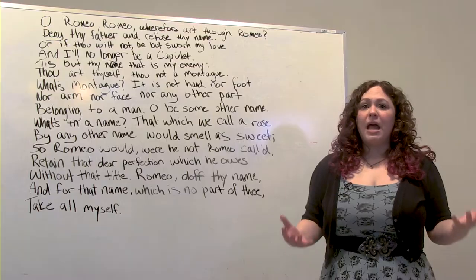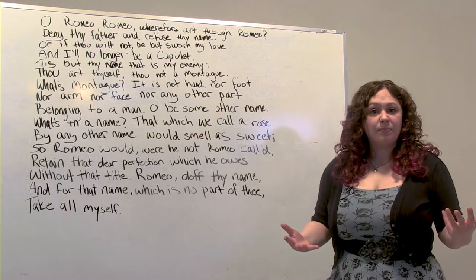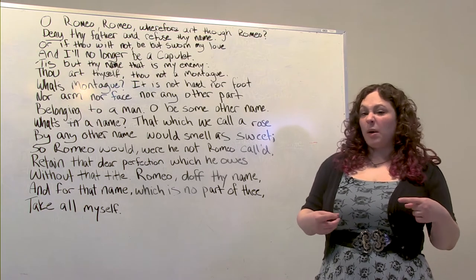We all have things that we want, right? We might want a cookie or a new pair of shoes or for our younger siblings to suddenly disappear. And we have different ways of getting what we want. In theater, we call what we want an objective. Getting what we want — let's say I want a cookie — that's going to depend a little bit on how I'm trying to get it.